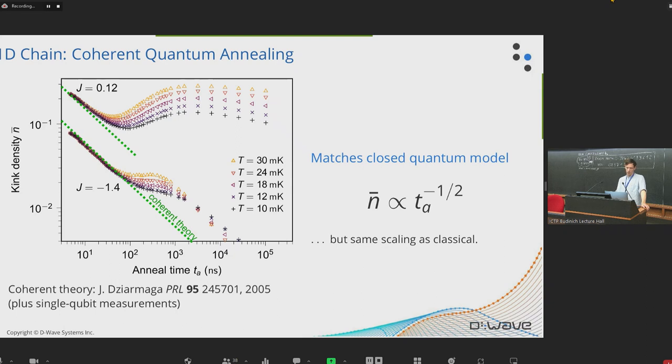So this is strong evidence that we are annealing a closed quantum system with negligible thermal effects. So the way that we get this coherent theory line is we just plug in the annealing parameters derived from single qubit measurements into the annealing schedule for our processor, and then we just appeal to the closed-form solutions to the system, which were developed in the 2000s.